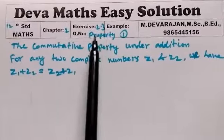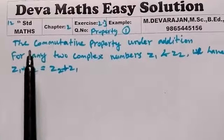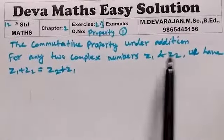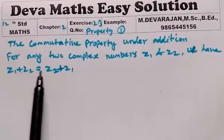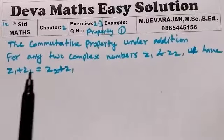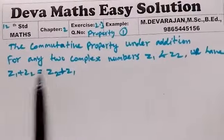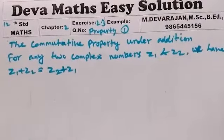Exercise 2.3, Property 1: The commutative property under addition. For any two complex numbers z1 and z2, we have z1 + z2 = z2 + z1. Proof: